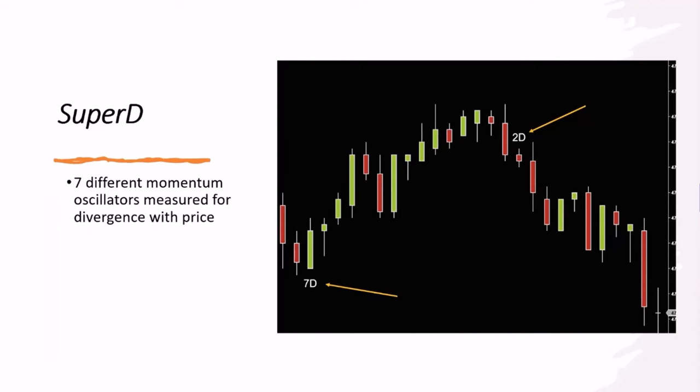The divergence improved our trading so much that we created another divergence indicator called McDiver, which works like Flash but with a different momentum oscillator. Then we thought: let's try seven different momentum oscillators and measure divergence of price against all seven. The number displayed tells you how many of those seven oscillators have indicated divergence at the open of that bar. That's how the Super D works — not only a confluence of trading styles but a confluence of momentum measurements.